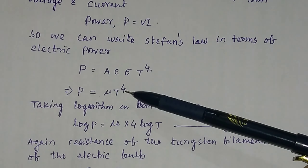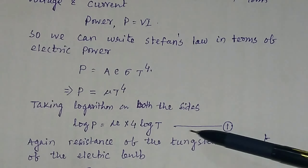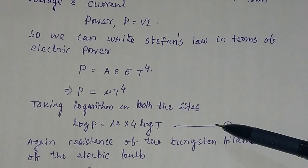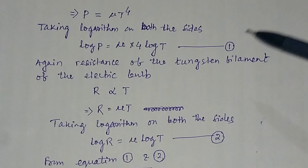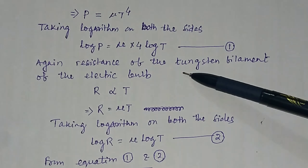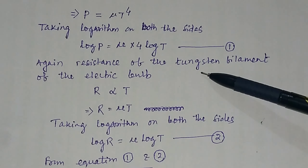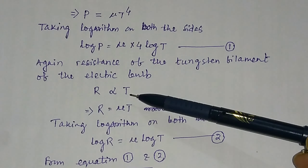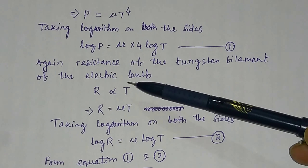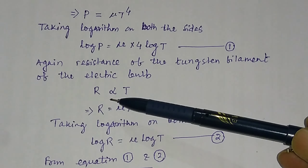The current is not increasing — there must be a fault. You see, the bulb is not connected. I am increasing the voltage now, the current is increasing, and the bulb is glowing. And you have to measure the voltage and the corresponding current.